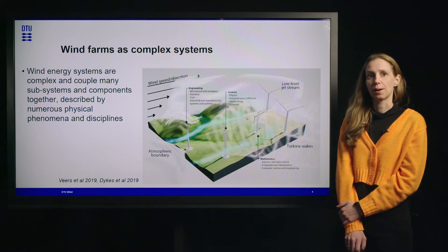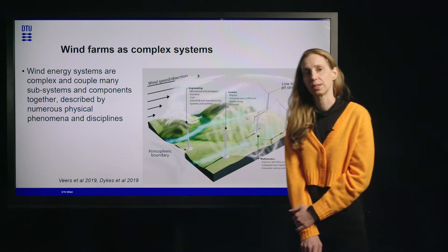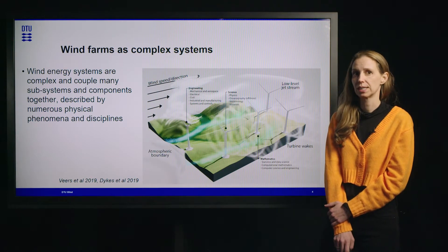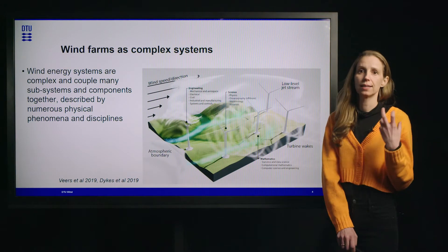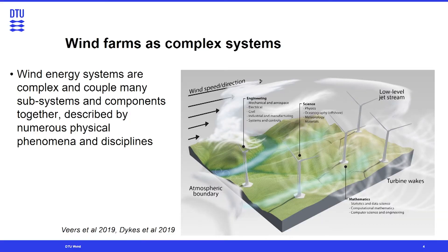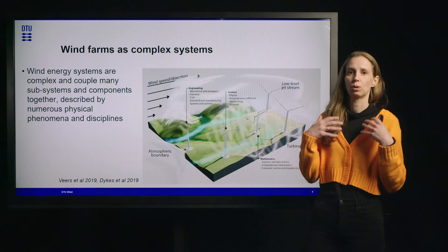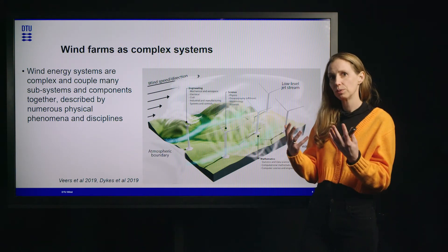Wind energy systems are complex. Over this course, I'm sure you've seen several examples of how wind is highly complex and multidisciplinary. There's many different things that go into understanding the physics involved in a wind farm — how they operate, how we maintain them, how they produce electricity, how that gets fed into the electricity grid system. From an engineering perspective, we have disciplines like mechanical and aerospace engineering. We're dealing with flow — wind coming into a turbine, wind coming into a wind farm — and that flow needs to be well understood.